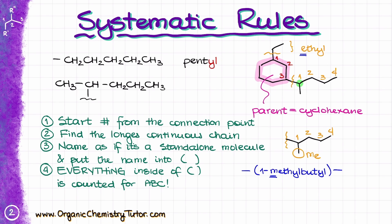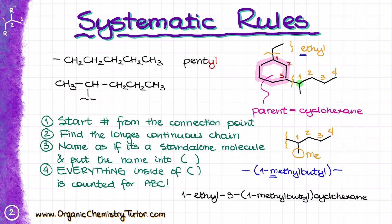Putting the full name together for this molecule: I start with the ethyl group at position one, then at position three I have my complex substituent, which is (1-methylbutyl). Finally, I add the parent name, cyclohexane. Notice there are no dashes or spaces between the closing parenthesis and the next letter — parentheses are treated as if they were a letter, and we only separate letters from numbers with a dash, and numbers from each other with a comma.